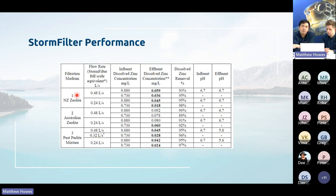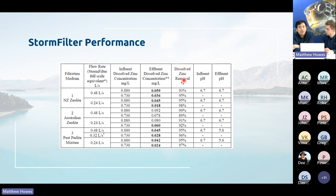Another performance test used zeolite media: when influent dissolved zinc concentration was high, zinc removal was up to 90–93%.